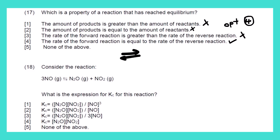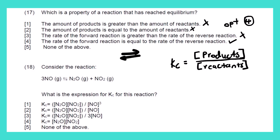We go to question 18: consider the reaction 3NO(g) → N₂O(g) + NO₂(g). The question asks: what is the expression for Kc for this reaction? We know that the equation to calculate Kc is equal to the concentration of the products divided by the concentration of the reactants. You should know that the products and the reactants must be in gas phase — any other phase does not take part in the Kc expression.